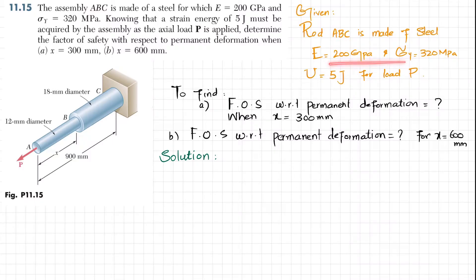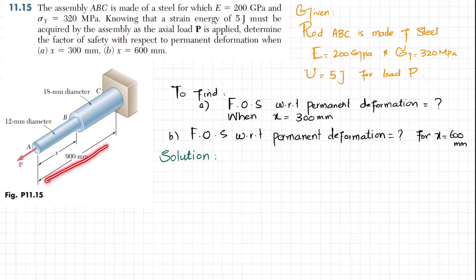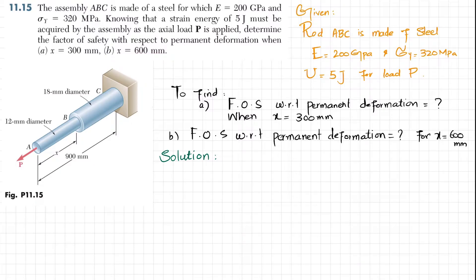Rod ABC is steel and all the data are given. The diameter of rod AB is 12 millimeters while the diameter of rod BC is 18 millimeters. Total length is 900 millimeters and x is the variation. We will put x equal to 300 and find the factor of safety, then similarly for x equal to 600 millimeters.